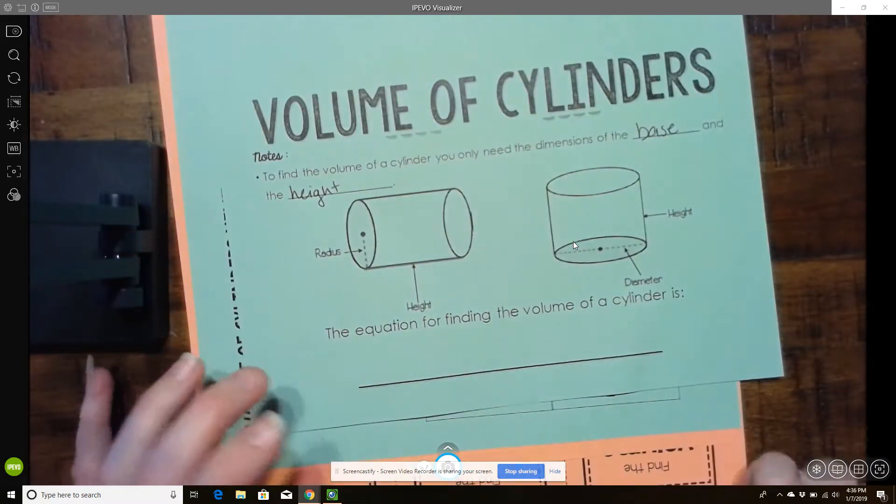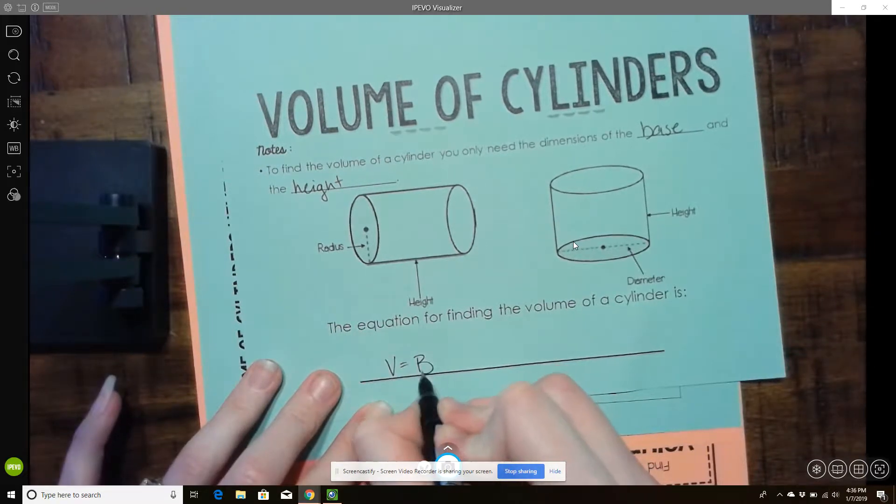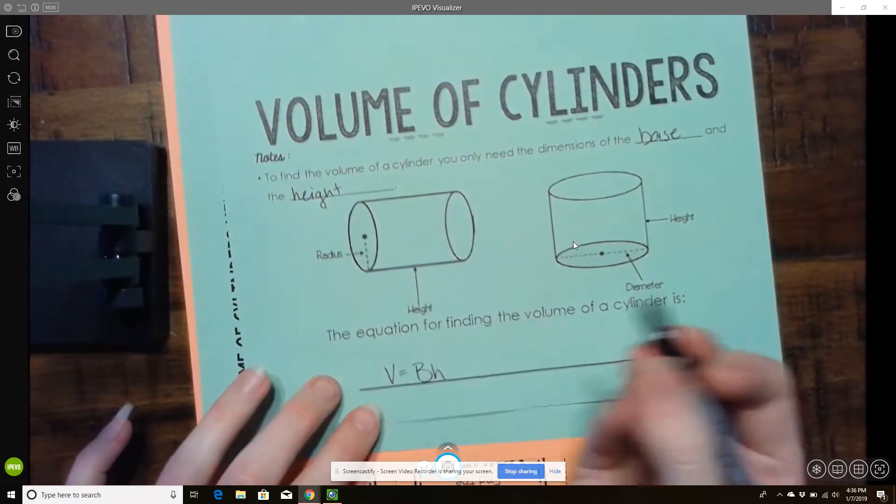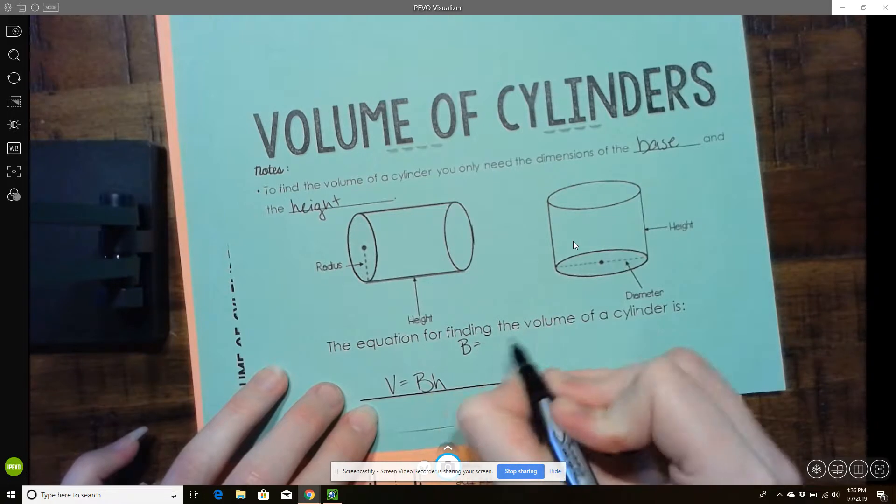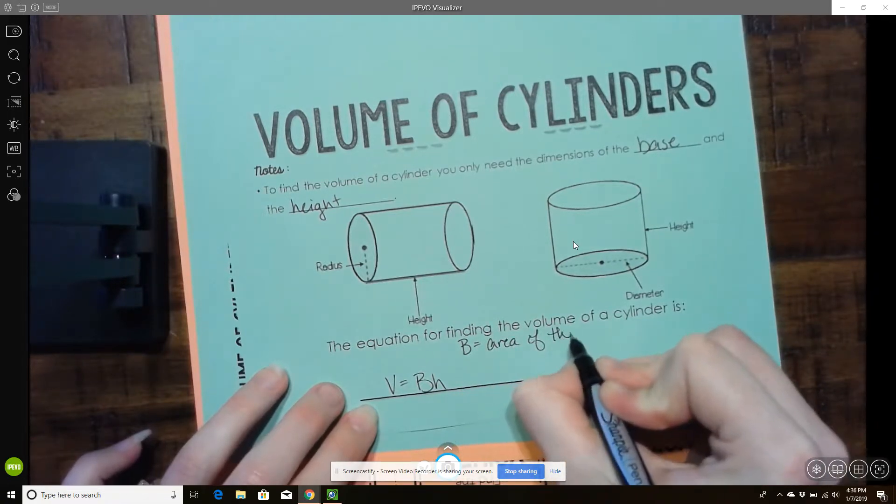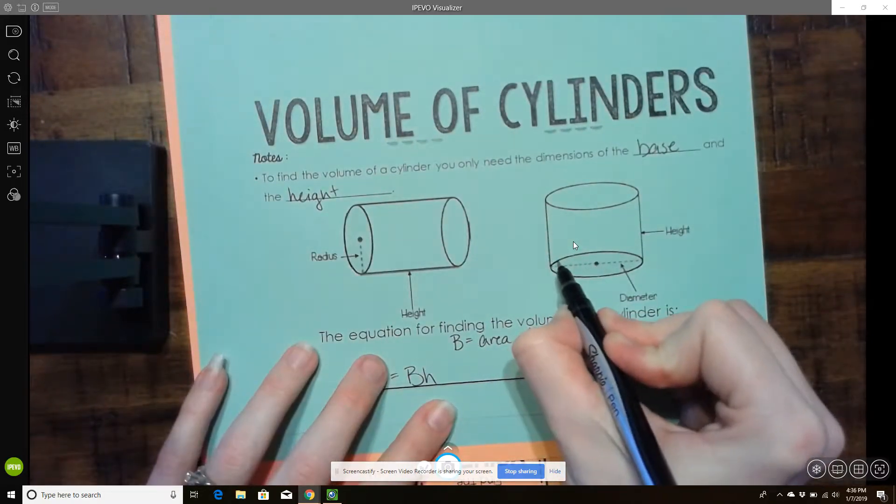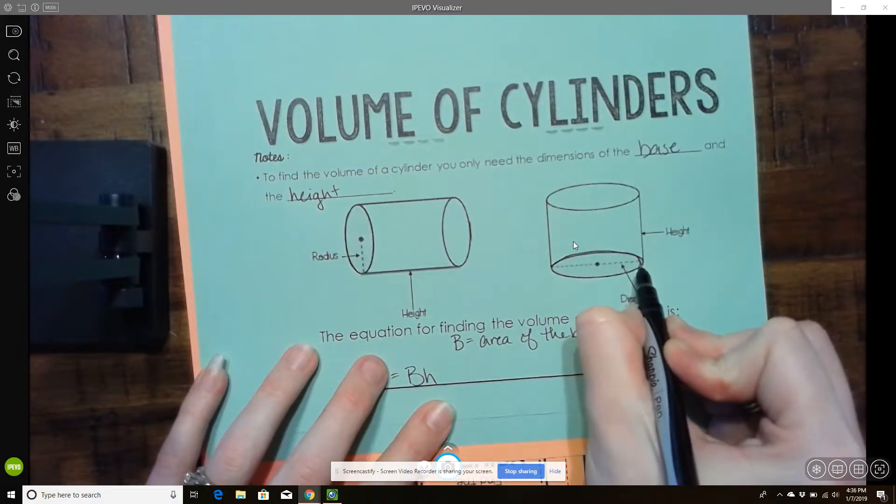So the equation for finding the volume of a cylinder is V equals big B, H, and big B is equal to the area of the base. And so in a cylinder, the base is always the circle.